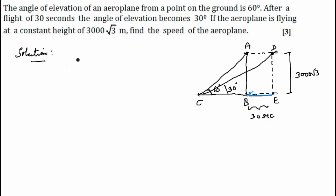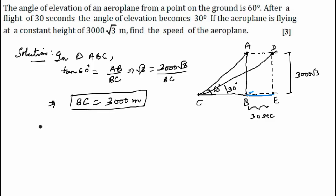In triangle ABC, tan 60 degrees—we're taking tan because we need to use the height and the base, since BC has to be found. Tan 60 equals AB by BC. Tan 60 is √3, AB is 3000√3, and BC is unknown. This gives, by cross-multiplication, √3 cancels, so BC equals 3000 meters.